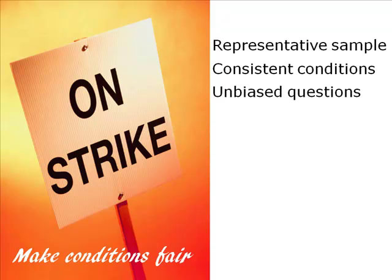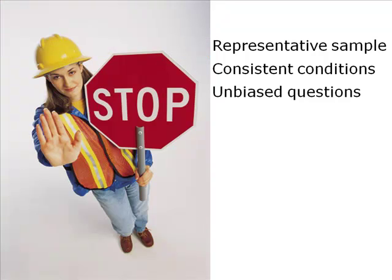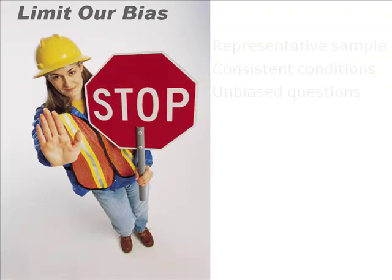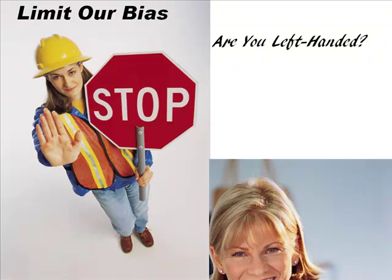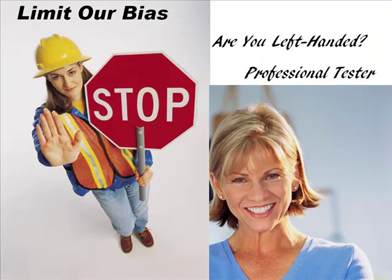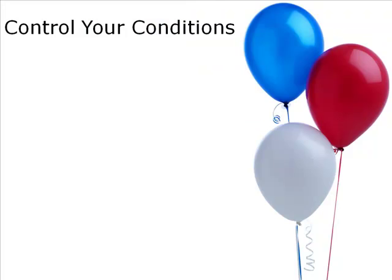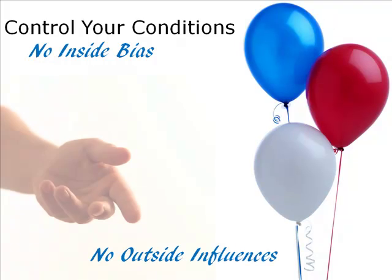Don't give anyone an undue advantage. In our experiment, we're going to avoid injecting our bias by limiting handedness to one question: are you left or right handed? And by using a standardized test of intelligence. Unlike a party, an experiment has controlled conditions — you must control the environment. You want to make sure no outside influences will impact the subject's performance.